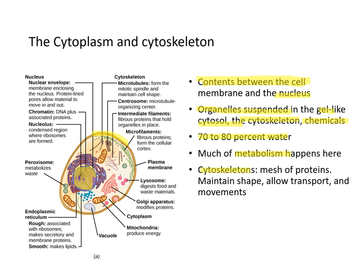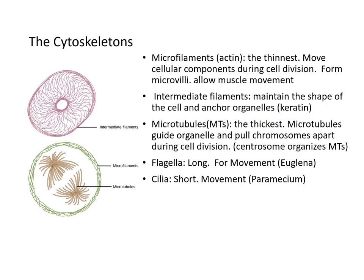The cytoskeleton is made of mesh-like proteins that maintain shape and allow transport and movement. It is divided into three main types. First are microfilaments, which include actin fibers and are the thinnest. Second are intermediate filaments, such as keratin. Third are microtubules, which are the thickest. Microfilaments move cellular components during cell division and also form the microvilli damaged in celiac disease. Actin fibers allow muscle movements.